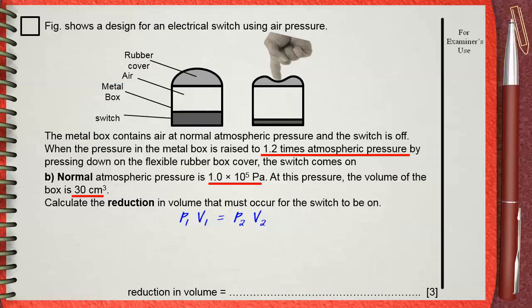Initially, the atmospheric pressure P1 is 1.0 times 10 power 5 pascals. For this pressure, the corresponding volume of trapped air is 30 centimeters cube under the rubber cover.